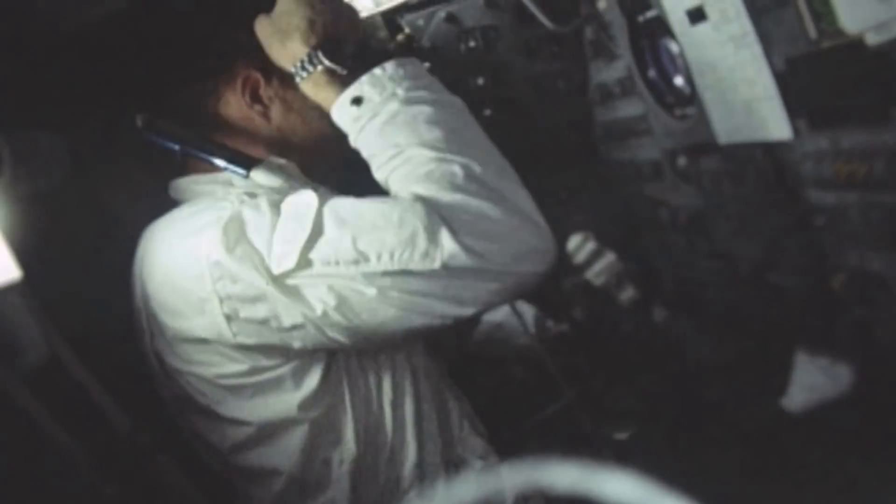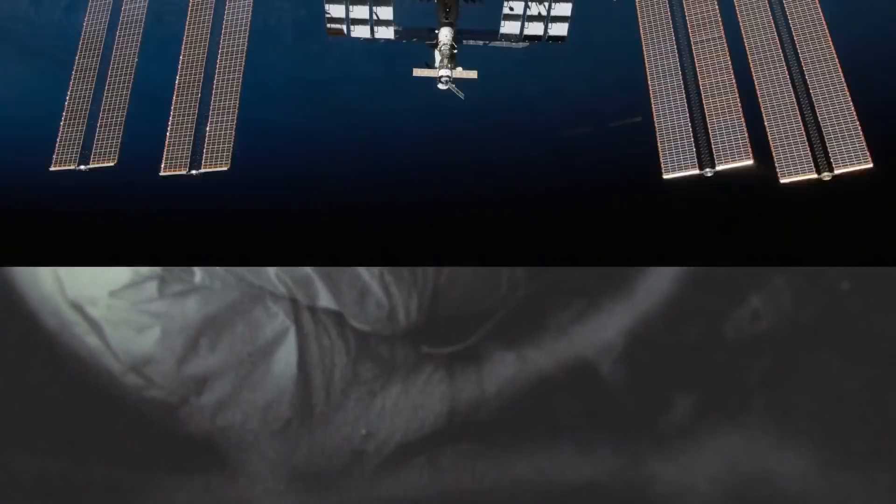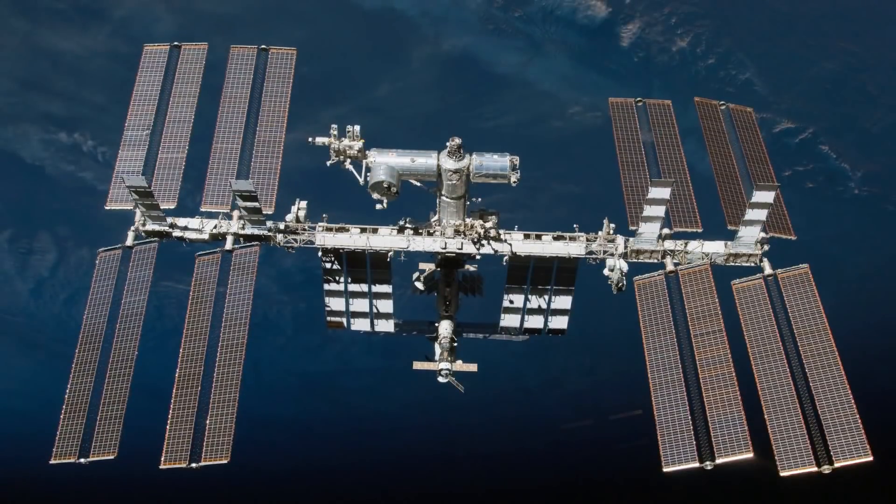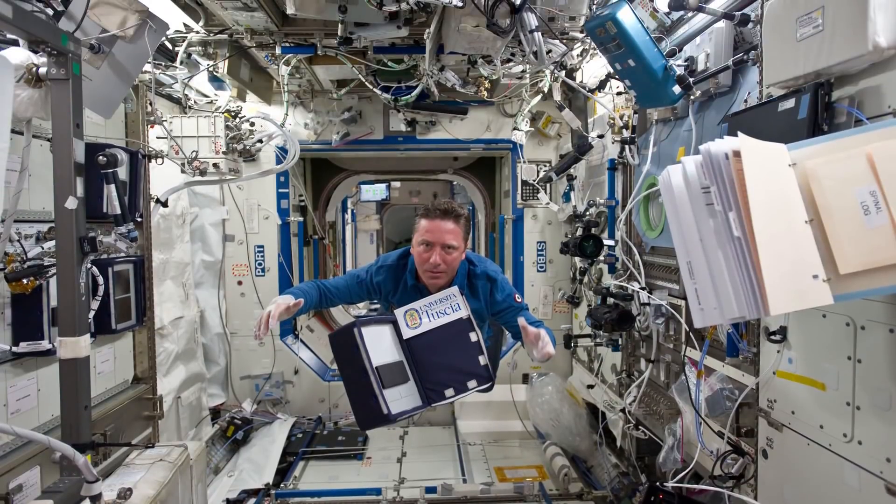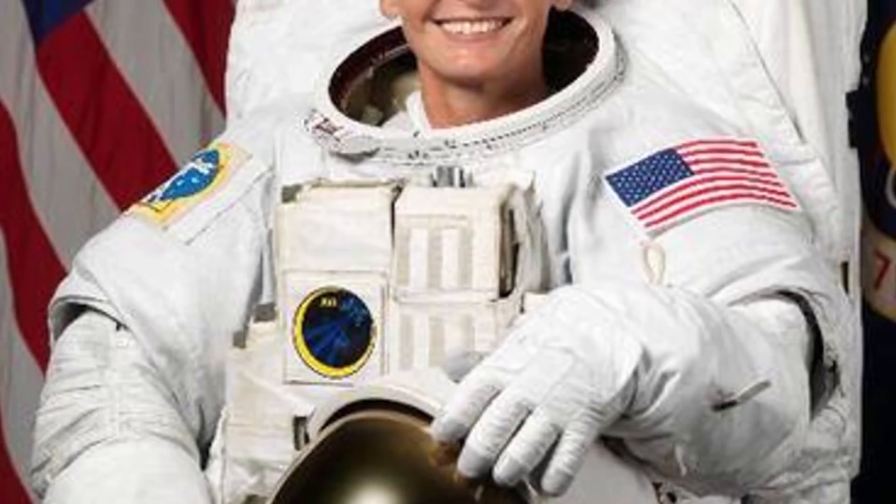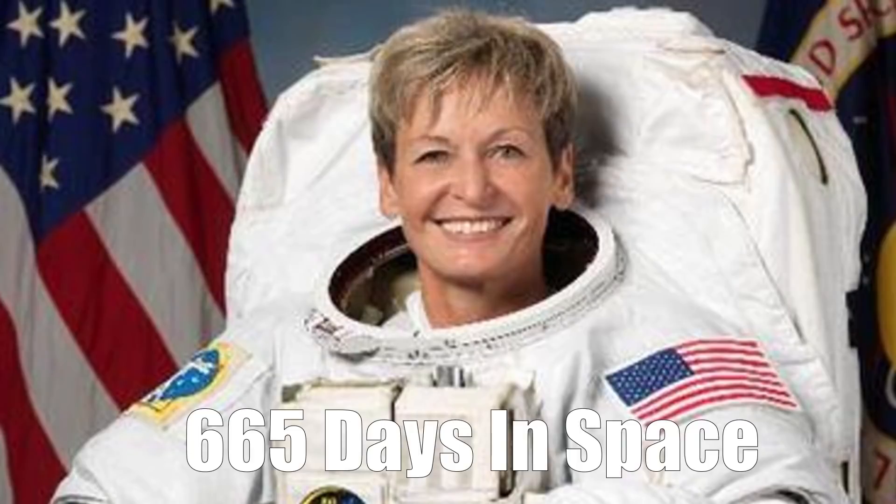Once everything is set up, a crew could be sent up to carry out research and experiments but would also continue to work on the base. Astronauts and researchers at the lunar base would likely follow a similar routine to the International Space Station. Astronauts on board the ISS usually stay for around six months, with three to six crew members at all times. Although the American astronaut Peggy Whitson has spent 665 days in space.